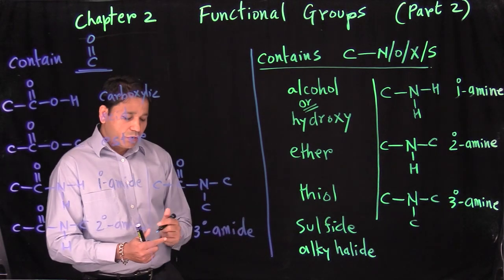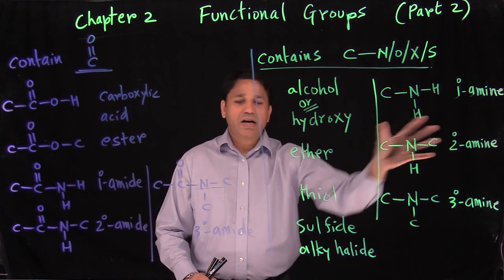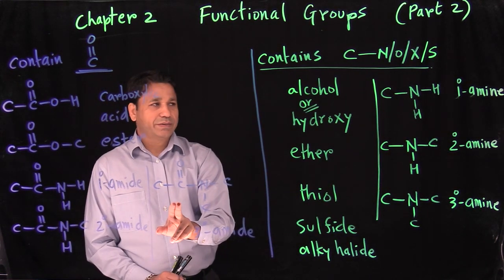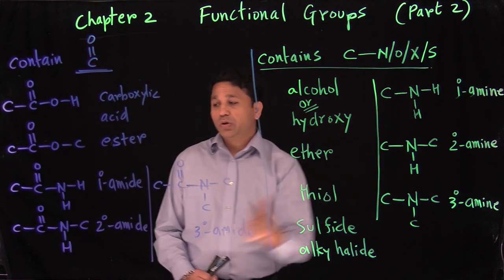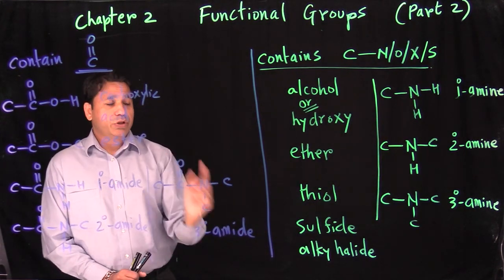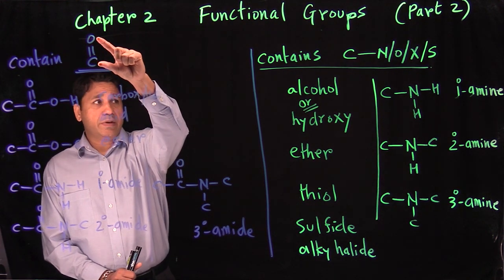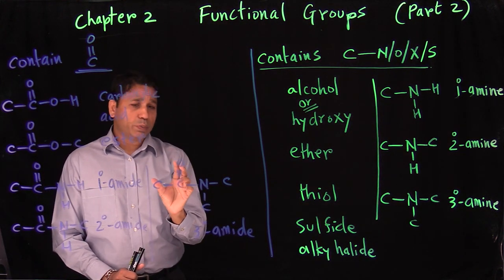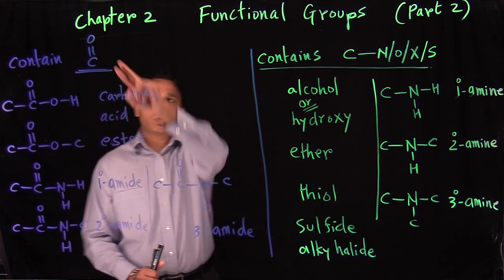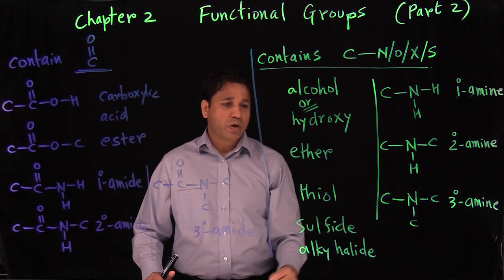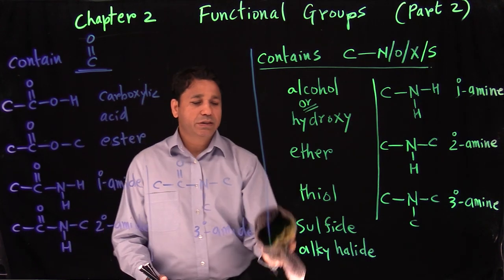These three amide types are the confusing ones because you also see NH2 in primary amine. The key is: the moment you see a carbon-oxygen double bond in your group, you categorize it as an amide. If there is no carbon-oxygen double bond, then it's an amine.